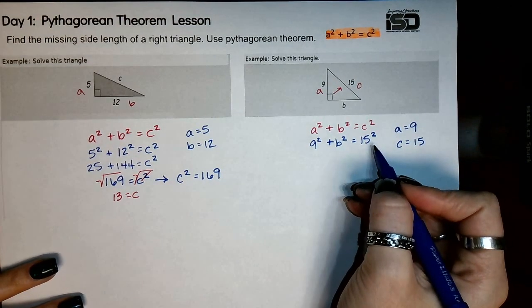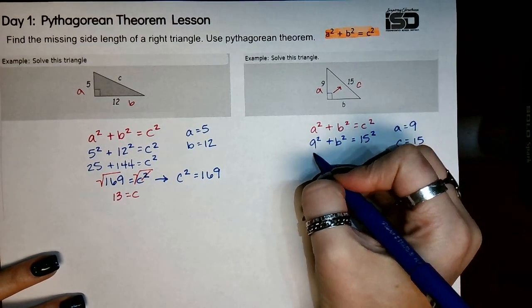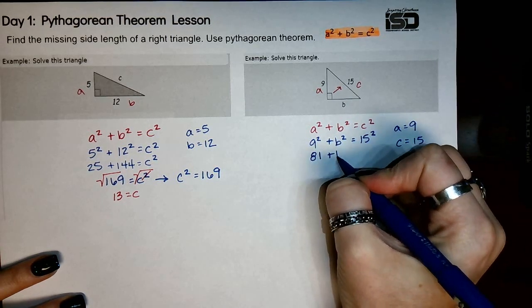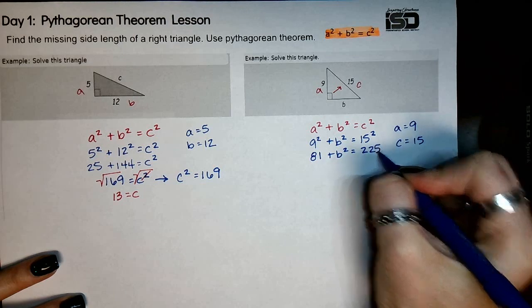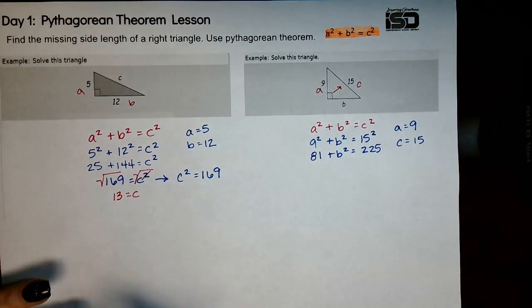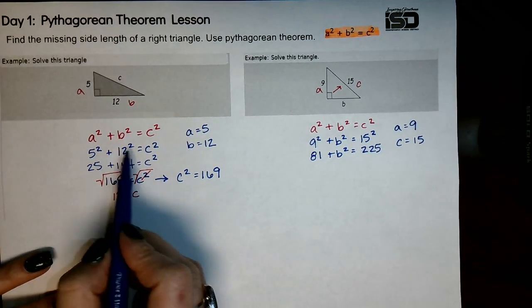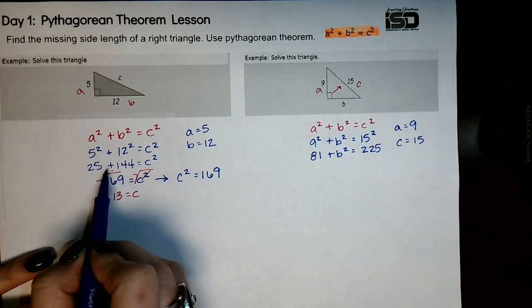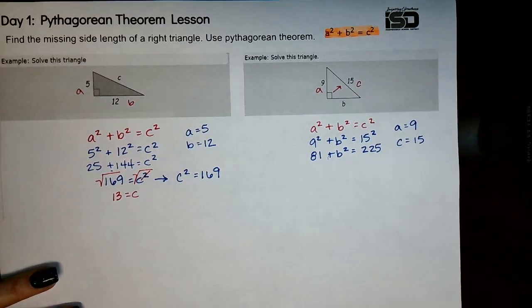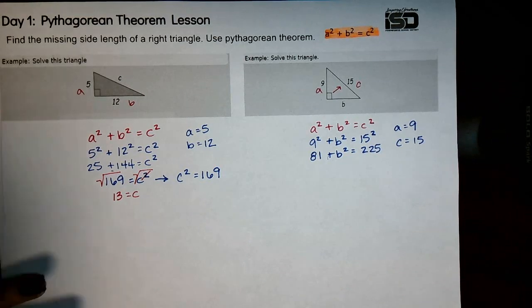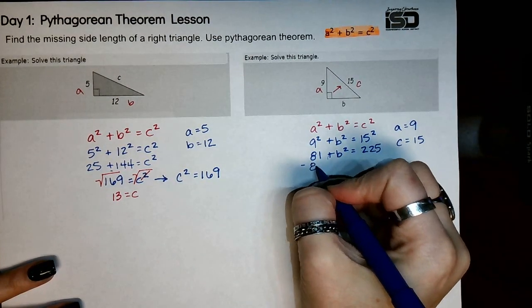From here, you're going to square these numbers. So 9 squared is 81. 15 squared is 225. Now, the difference between these two situations: over here, notice that you added the legs together. Well, since you're missing one of these legs, instead, you're going to solve an equation, and your first step in doing so is to subtract this 81.